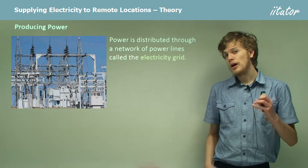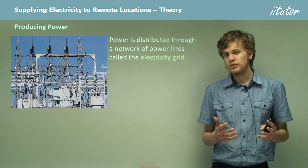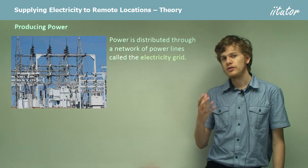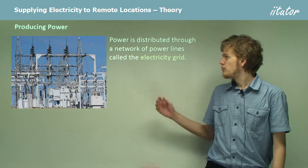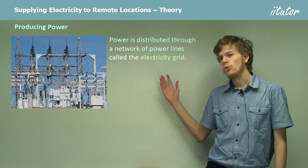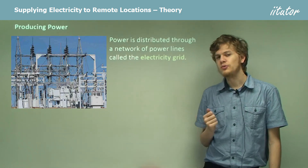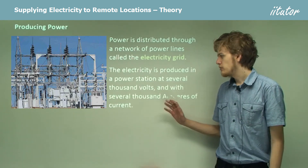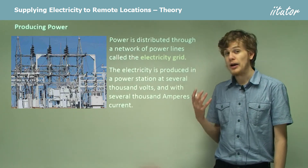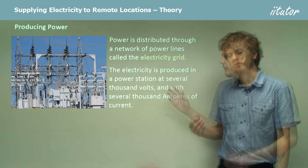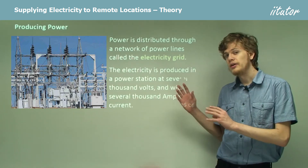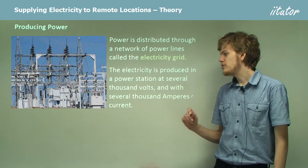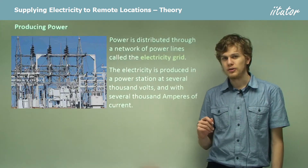Power is distributed from electricity generators into cities and remote locations through something that we call the electricity grid, or just the grid. The electricity is produced at a power station and it'll be generated at several thousand volts with several thousand amperes of current.